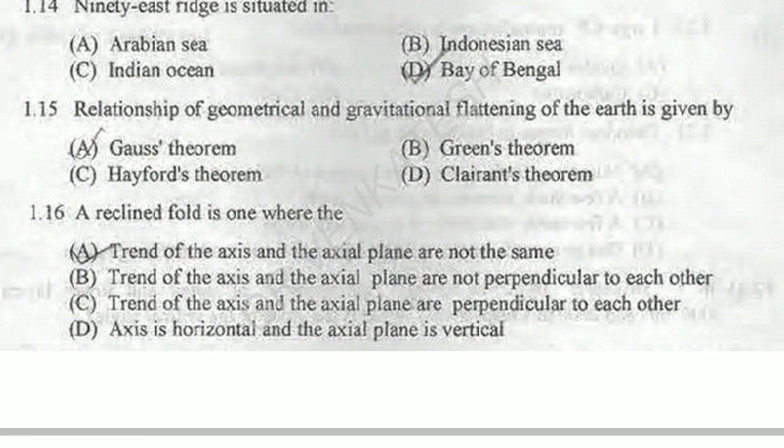Next question: the relationship between the geometrical and gravitational potential of the Earth is given by Gauss's theorem, Green's theorem, Hefford's theorem, or Kralen's theorem? Gauss's theorem states the relationship between the hypothetical sphere of the Earth and the gravity of the Earth. Green's theorem relates to the sum of integrations of two different paths, so it is not related to this. Option A — Gauss's theorem — is the correct answer.